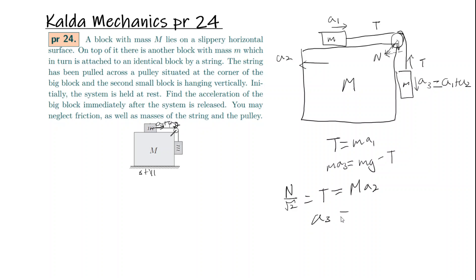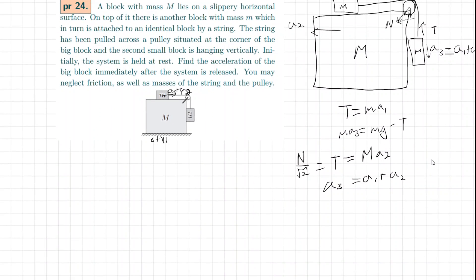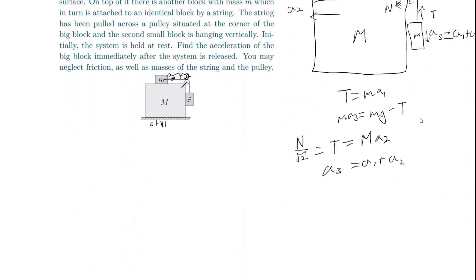So lastly, a sub 3 equals a sub 1 plus a sub 2. Now we can just solve this and this isn't difficult to solve. So what do we ultimately want here? We want a sub 2. So let's try to get a sub 2 out of this equation. First we can combine these two, and that gives you a sub 1 equals M over m a sub 2.